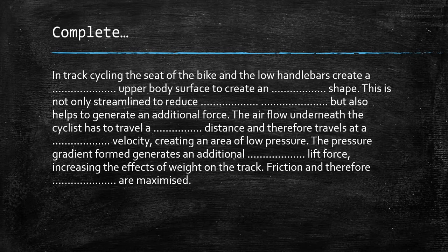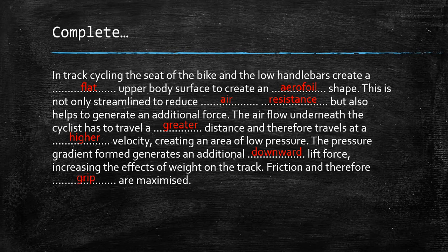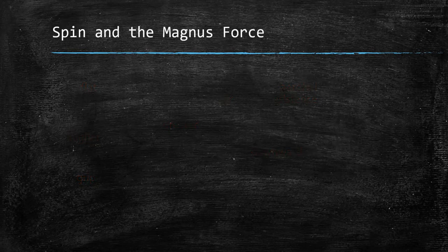Pause the video, take a couple of minutes, and complete this paragraph filling in the gaps. In track cycling, the seat of the bike and the low handlebars create a flat upper body surface to create an aerofoil shape. This is not only streamlined to reduce air resistance, but also helps to generate an additional force. The airflow underneath the cyclist has to travel a greater distance and therefore travels at a higher velocity, creating an area of low pressure. The pressure gradient formed generates an additional downward lift force, increasing the effects of weight on the track. Friction, and therefore grip, are maximised.